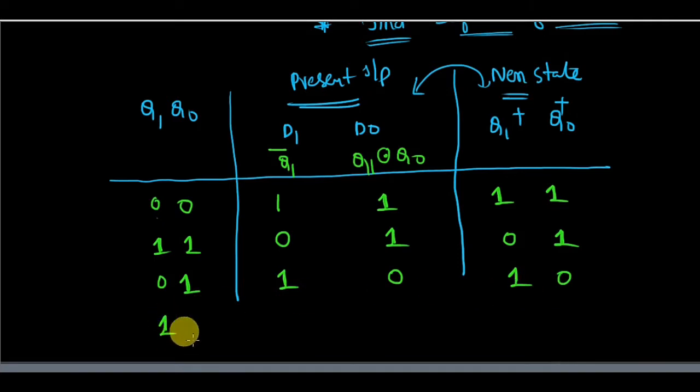Now if I take 1 0 here again, 1 bar is 0. These two will be 0s and again it will go into 0 0. So after this again it is going to 0 0 state. So now see, the question is completed. Why? Because you can look here.